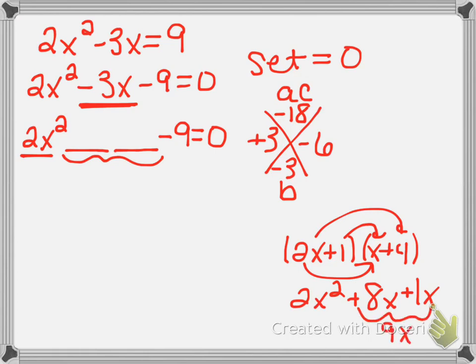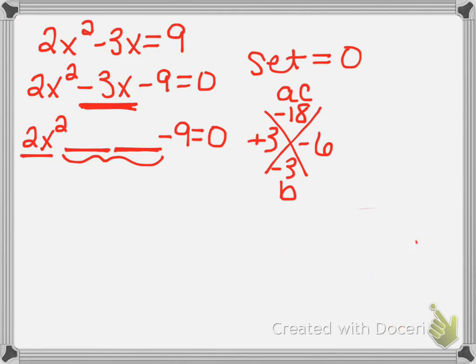So what we're doing is that process in reverse — we are taking this middle term and splitting it back up into the two terms that generated it, that combined and became it. Those two terms are going to be a positive 3x and a negative 6x. I'll put the minus 6x first and the positive 3x next.